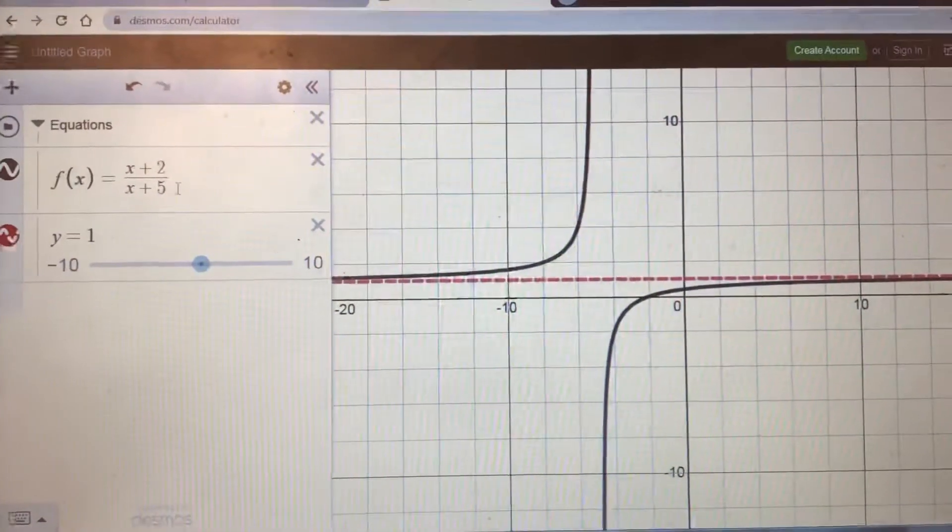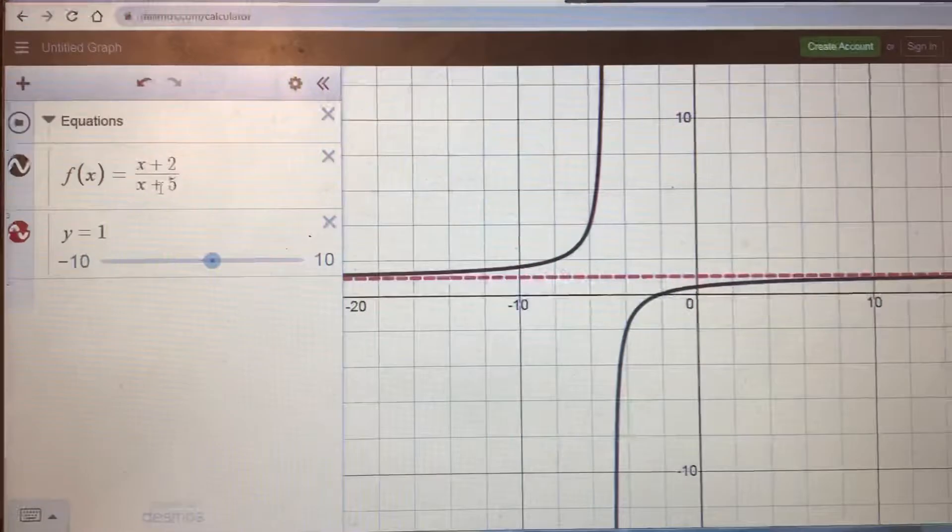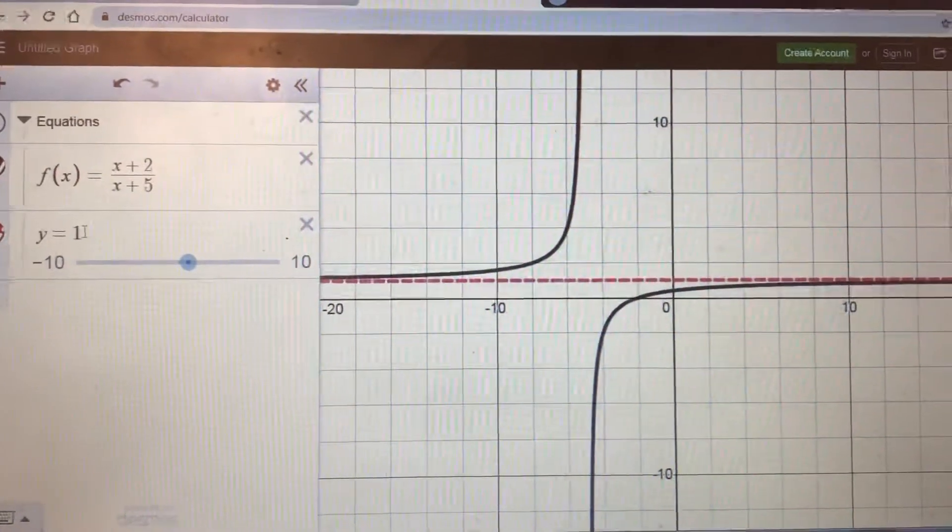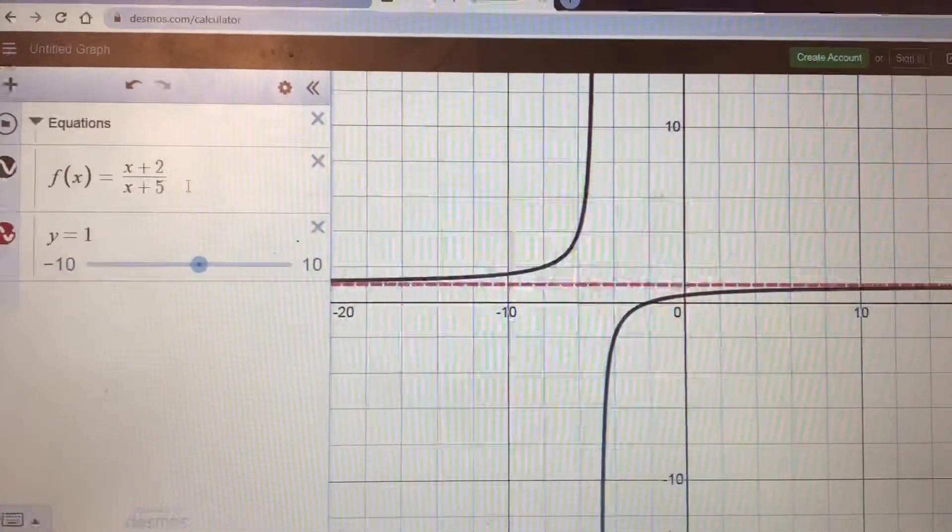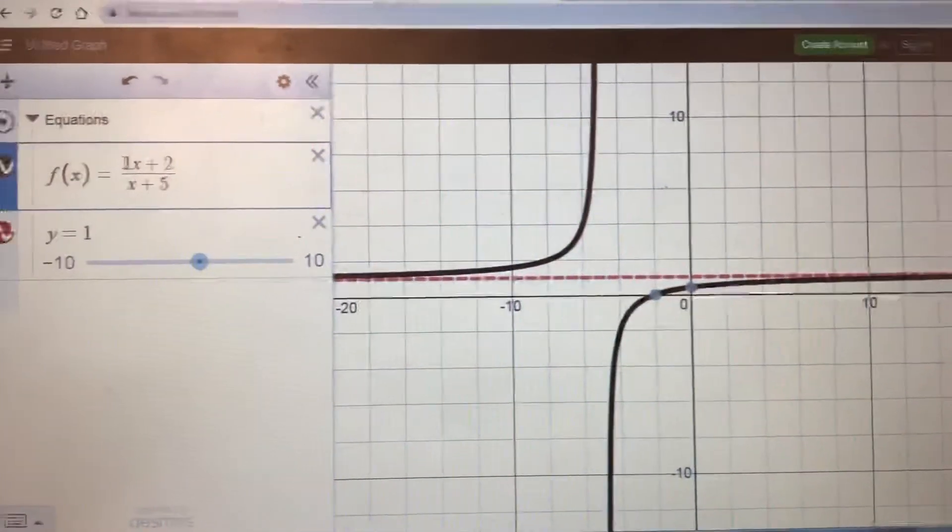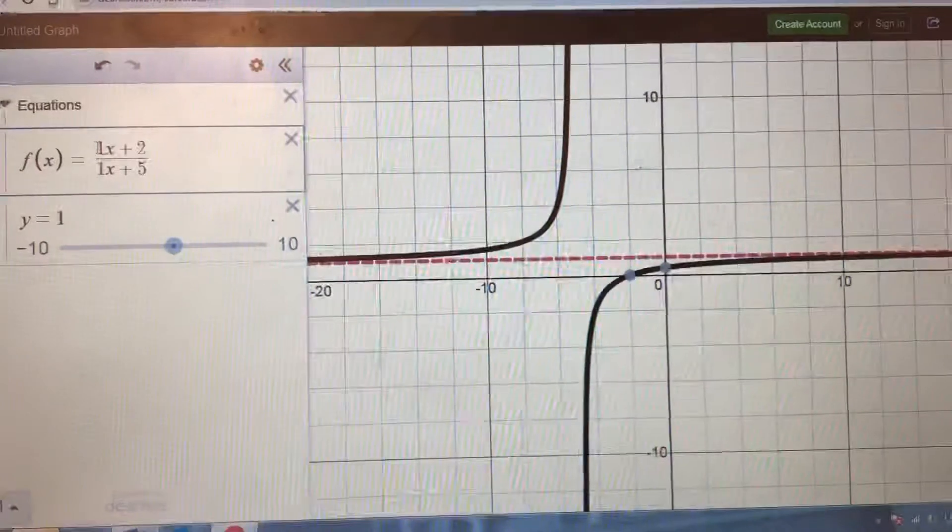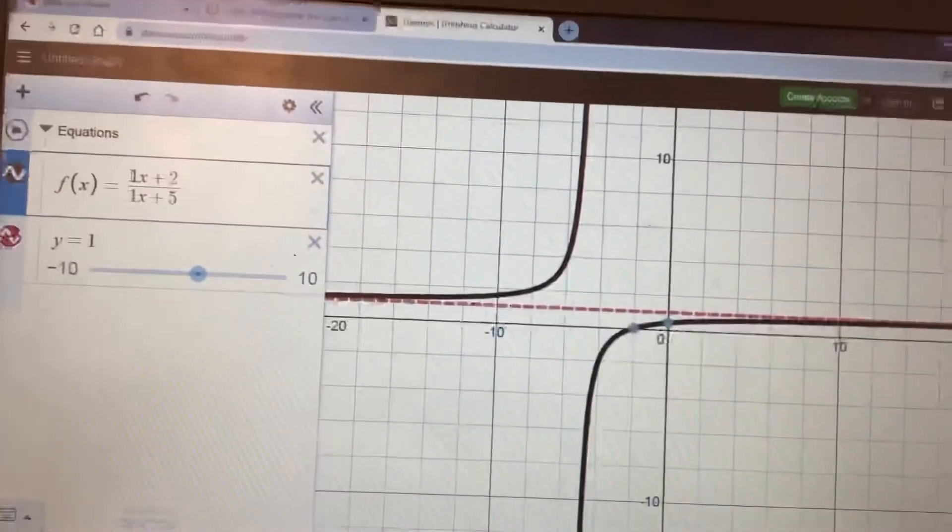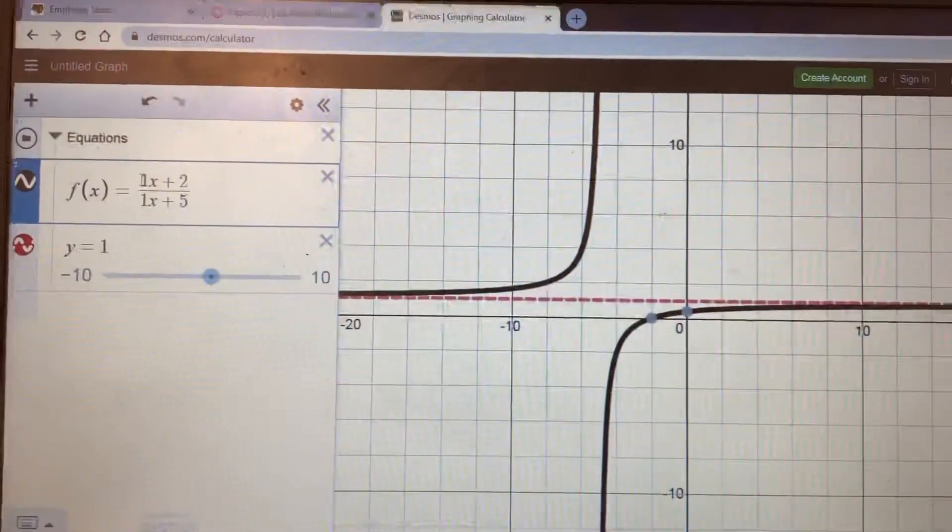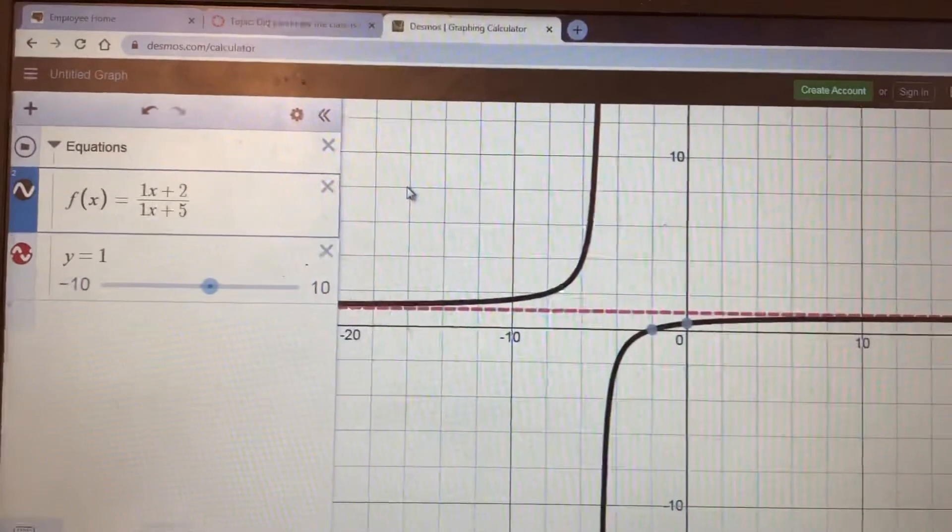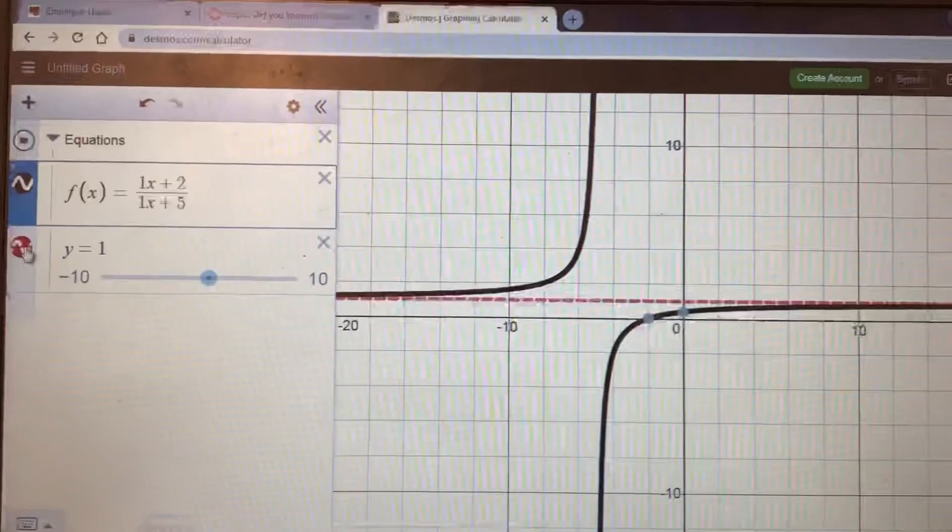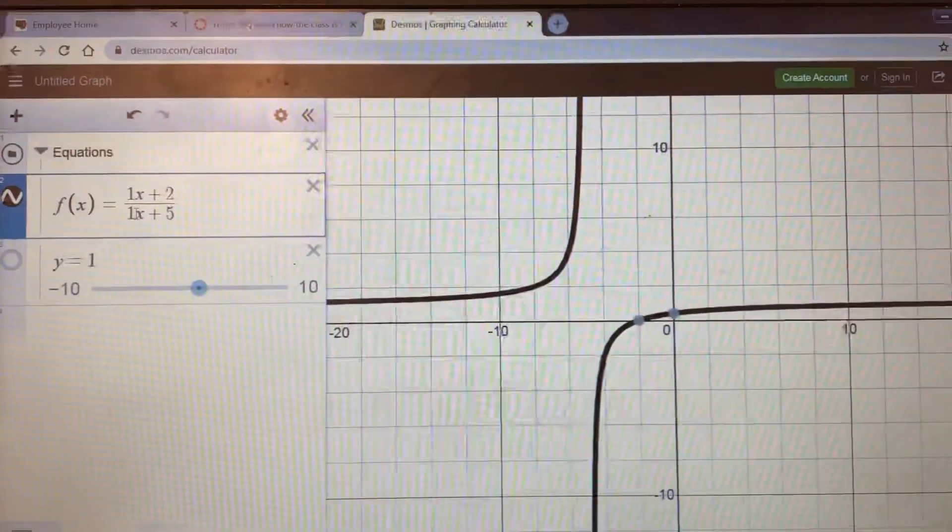But the question is where in here can we discover the equation of the horizontal asymptote? In other words, where in here can we get the number one? There's two number ones up here - there's one here and there's one here. So is it one of those? The way to test a conjecture is to change that number and see if it matches your prediction.